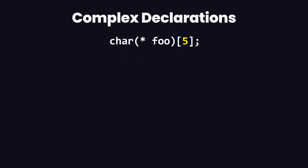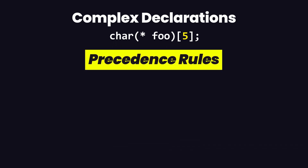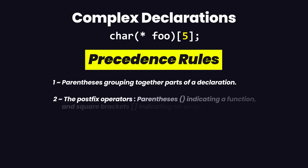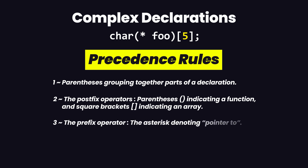The way to read a complicated declaration is by following the precedence rules. There are three main rules. The first one is that parentheses grouping together parts of a declaration have the highest precedence. After that we have the precedence of postfix operators — these can be parentheses indicating a function, a square bracket indicating an array, or something like a ++ operator.